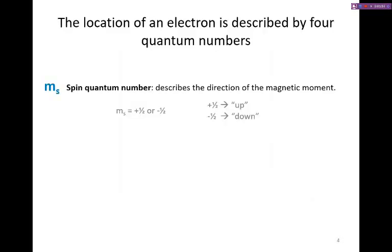That brings us to our fourth quantum number which we call the spin quantum number. Just to remind you, we talked about already the principal quantum number which describes the size of the orbitals. L, which is our angular momentum quantum number, which describes the shape of an orbital.